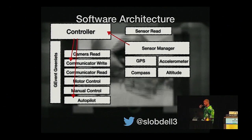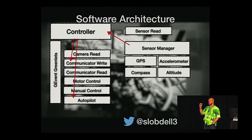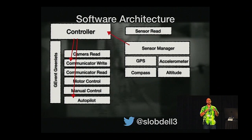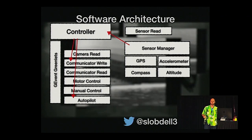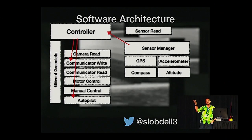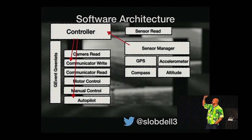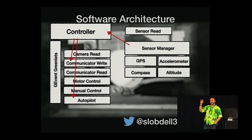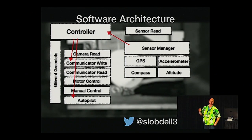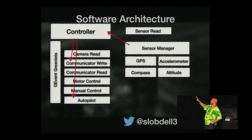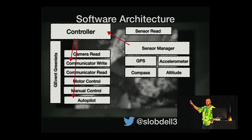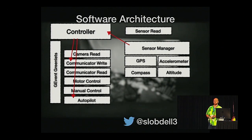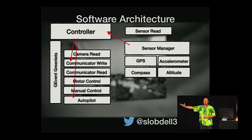We can do that with every single sensor. In this case I have a GPS, accelerometer, compass, and altimeter. For all of those I have drivers written in C++, I surface those functions up to Python, and then a sensor manager manages all of them. The controller polls the sensor manager every one-tenth of a second, updates, and communicates with other greenlets — sending data back to the client with GPS, altitude, and so on — and sends it to the autopilot.